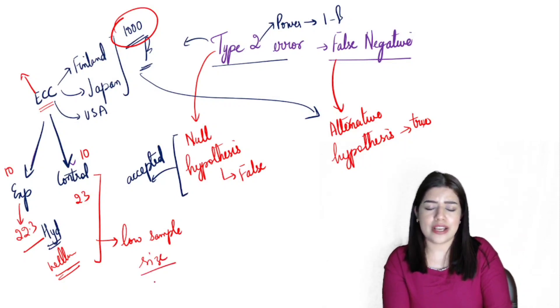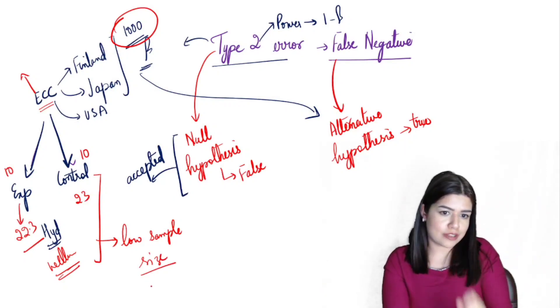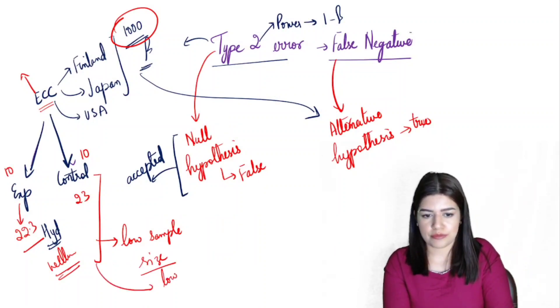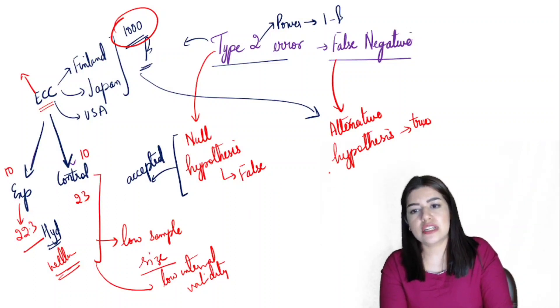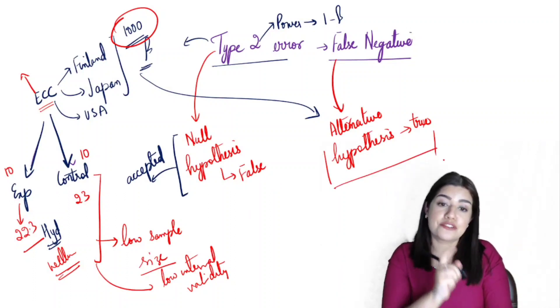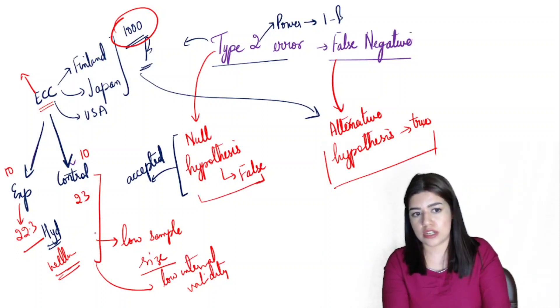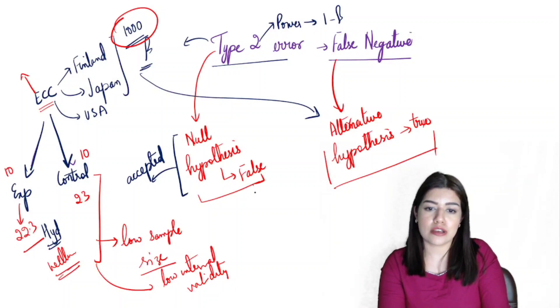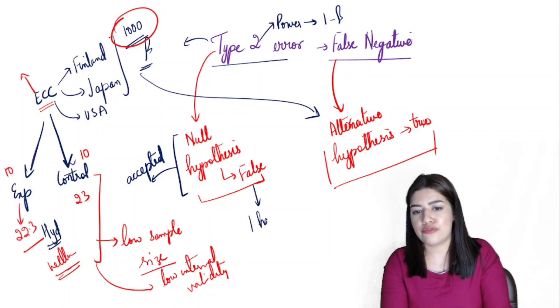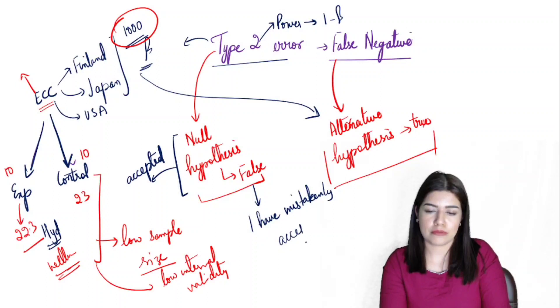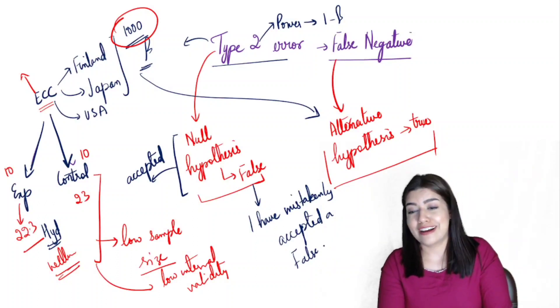There can be many reasons, like I said, but a compromise of internal validity is most often the reason here, and low sample size. So low internal validity would lead me to basically reject an alternative hypothesis which ideally should have been true and will lead me to accept a null hypothesis which is really false. Therefore, I get a negative result when I should have actually had a positive result. So we consider this a false negative. I have falsely or mistakenly accepted a false null hypothesis.